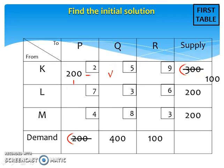At this square, again, look at the supply and demand value and choose the smallest value. Here, between 100 and 400, the smallest value is 100, so assign 100 to this square. Now, the supply at this row is finished and the demand at this column is left with 300 units.